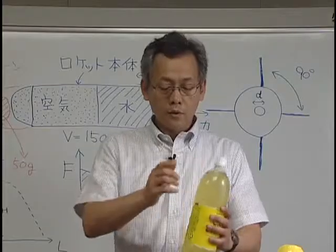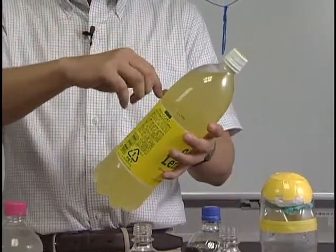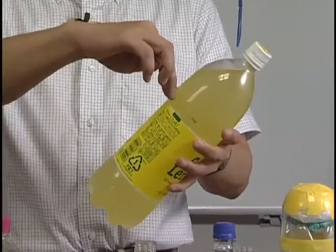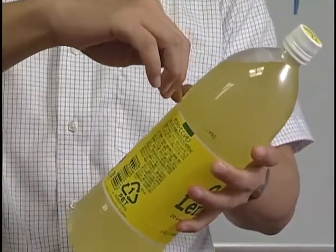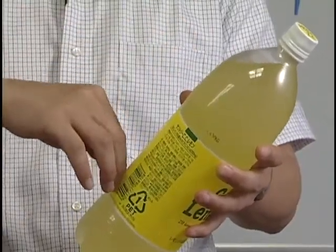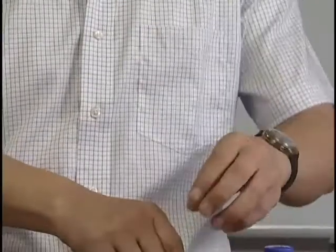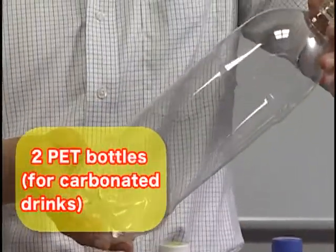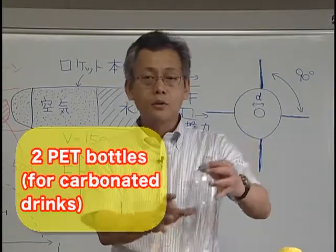So get yourself some carbonated drink PET bottles, empty and rinse and dry them, and peel off their labels. If you have trouble removing the label, you can use a cutter to scrape it away. Avoid damaging the bottle's body when using the cutter. You need two flawless carbonated drink PET bottles. Check them over before putting them to use.